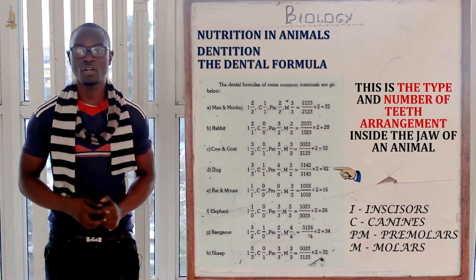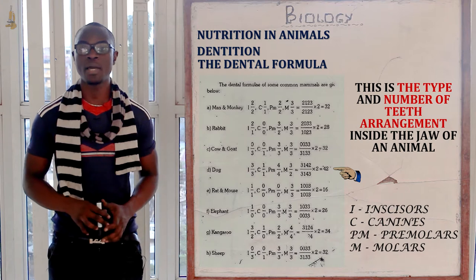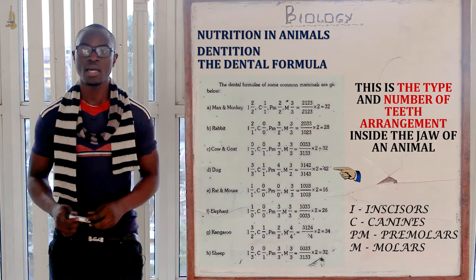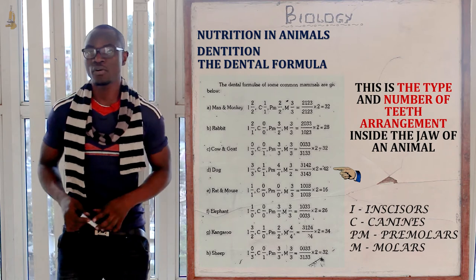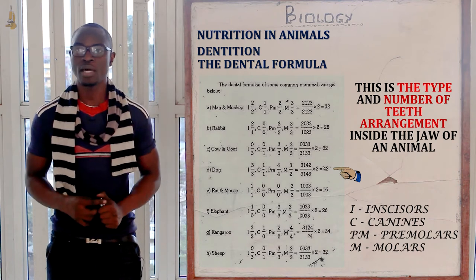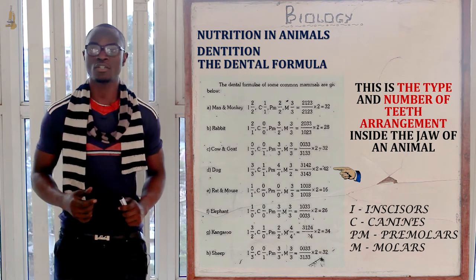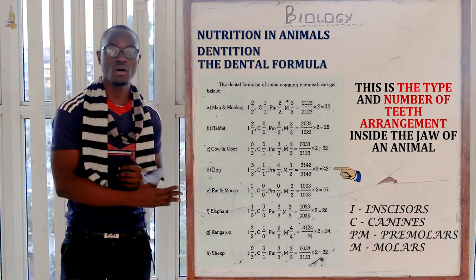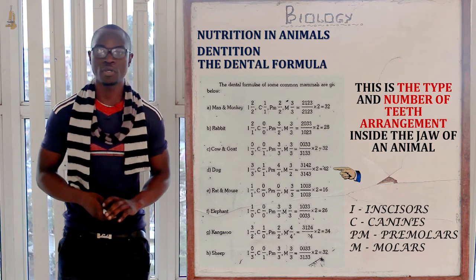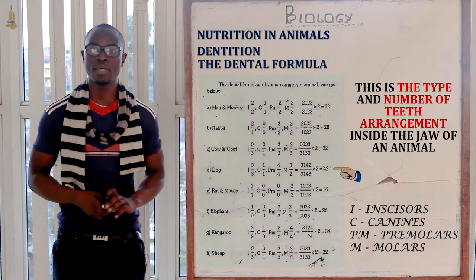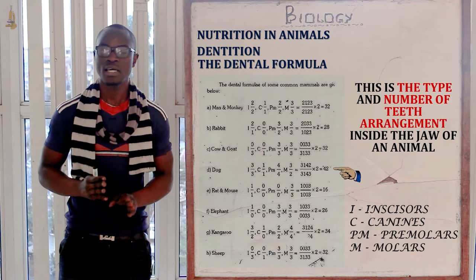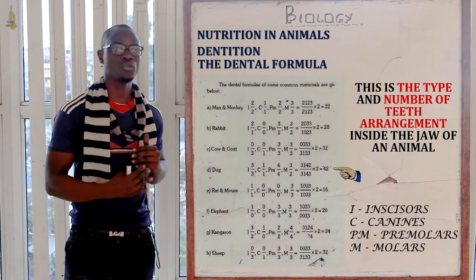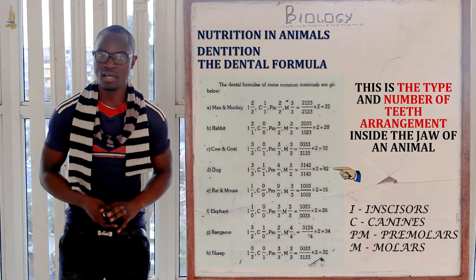For example, the dog has the dental formula: I 3/3, C 1/1, PM 4/4, M 2/3, giving a total of 42 teeth. If you add all the values on one side, you get 21, which represents half of the jaw. To get the actual total, you find the sum of these figures and multiply by 2 to get 42.